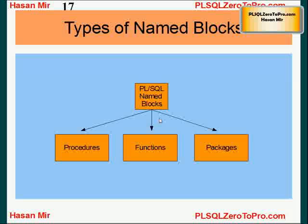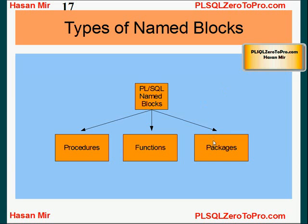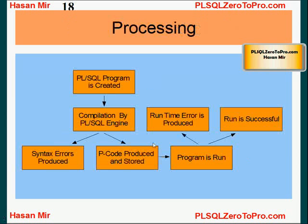Named blocks can be divided into three types: procedures, functions, and packages. A package is simply a group of procedures and functions. The main difference between a procedure and a function is that a function returns one value back — you call a function to do some processing and get one result back. Procedures are called to do one-time processing and are not expected to return any result. In coming tutorials I'll cover all these in detail.